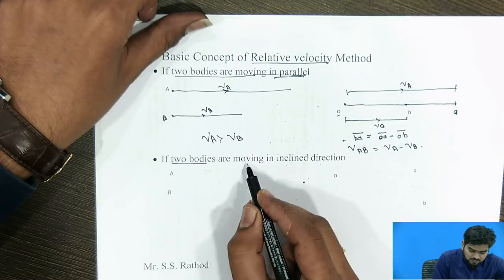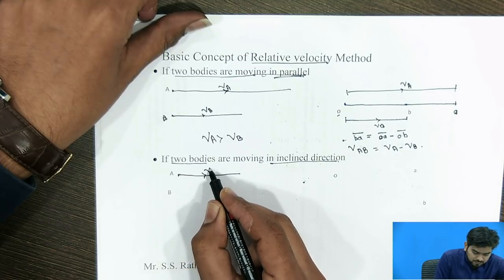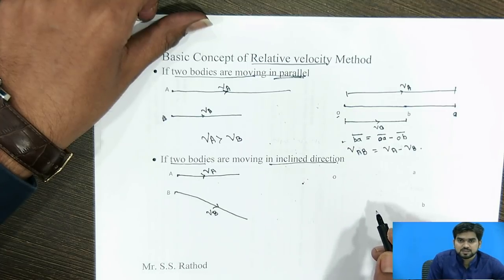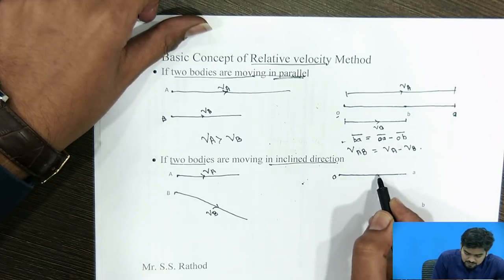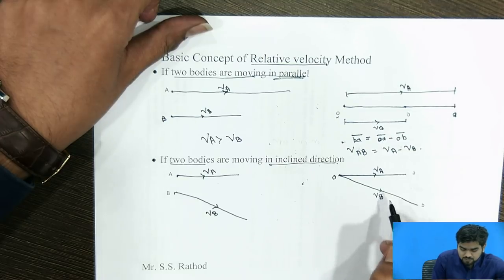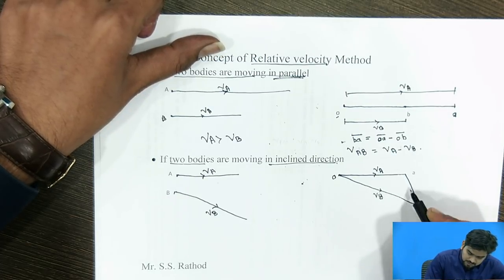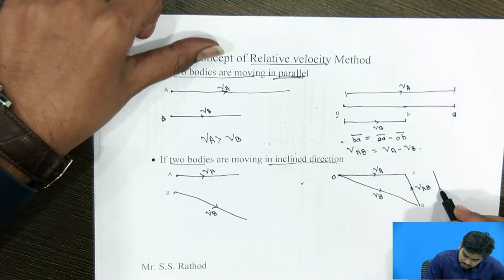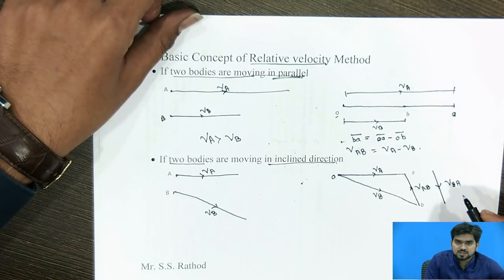If suppose two bodies are moving in an inclined direction — body A having velocity VA and body B having velocity VB — we are knowing the magnitude as well as the direction of both. From the O pole we draw velocity VA in magnitude and direction, and similarly VB. If we join A to B, it gives the velocity of A with respect to B. If the arrow is drawn in the downward direction, it gives the velocity of B with respect to A. This is the basic concept of the relative velocity method.